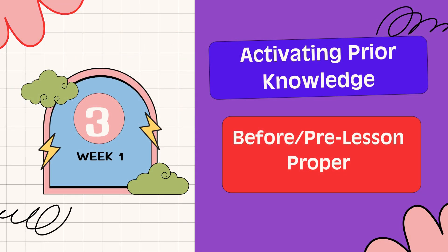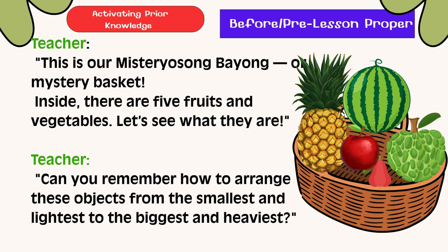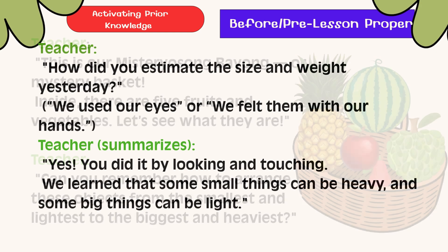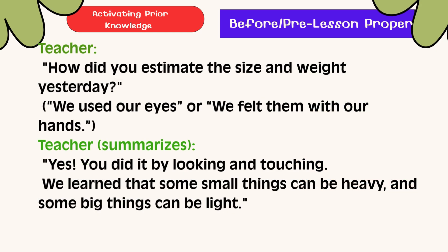Activating Prior Knowledge: This is our misteryosong bayong or mystery basket. Inside, there are five fruits and vegetables. Let's see what they are: Pineapple, Watermelon, Makopa, Apple, and Atis. How did you estimate the size and weight yesterday? Correct! We used our eyes or we felt them with our hands — by looking and touching.